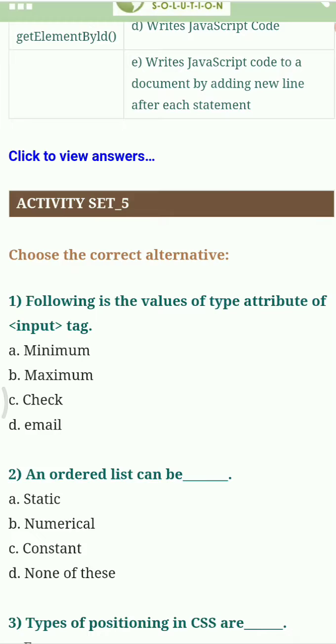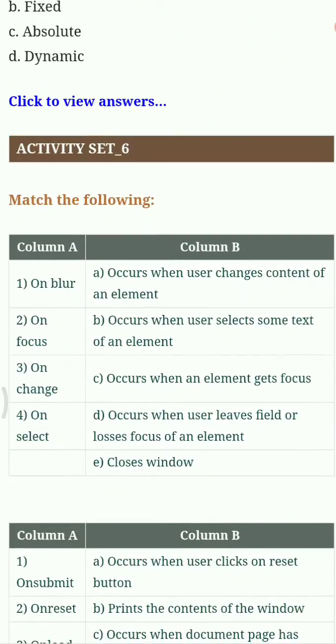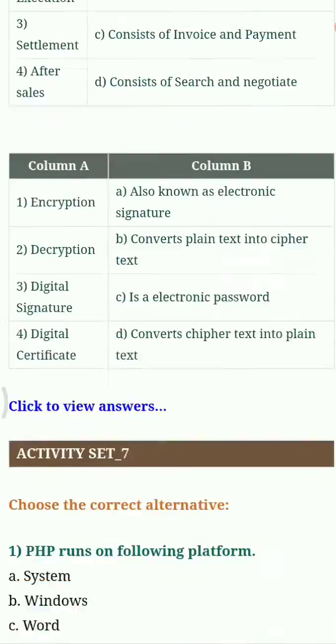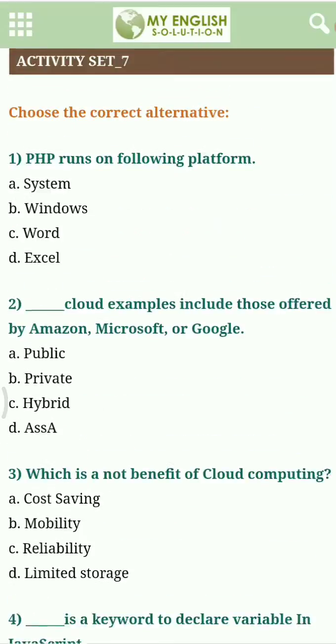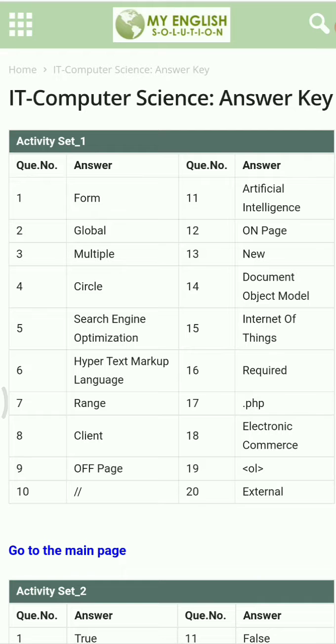So two correct options, one correct option, everything is there. So what is the benefit of this question bank is you can also cross-check your answers. To cross-check your answers, just click on 'click to view the answers' and you will get the whole answer key of this question bank.